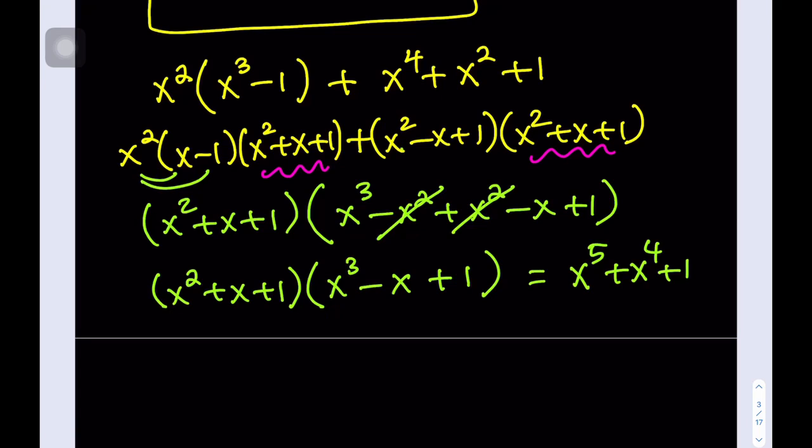Our 5th-degree polynomial — the quintic — can be factored into a quadratic and a cubic. Does that mean it has roots? If this cubic has real roots, which it has to have at least one of, then this quintic will also have at least one real root. I hope you enjoyed the video. Thank you for watching — don't forget to comment, like, and subscribe. See you in the next one.